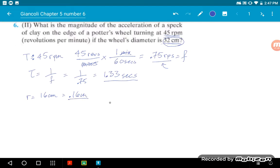So, we have all the things that we need. We have an r, we have a period. Let's just plug it into our acceleration equation. By now, many of you should be used to this equation, where acceleration is equal to 4π²r over period squared.